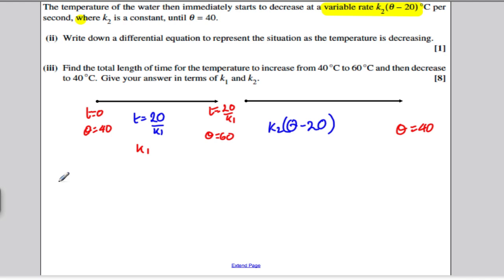So part two, part II, asks us to write down the differential equation to describe this. Well, what's happening here? The rate of temperature is decreasing, so the rate of change of temperature, theta by dt, must be equal to the negative of the rate, which is K2 theta minus 20. It's important to get that negative sign in there to denote decrease. And there we go, part II is done for us simply.